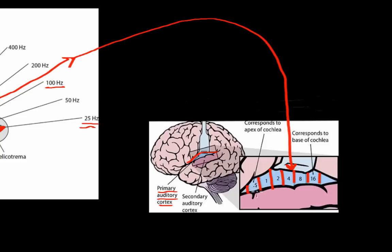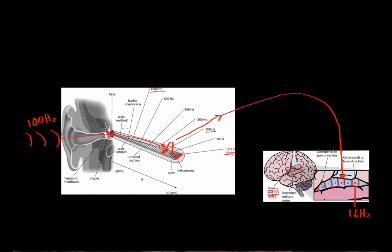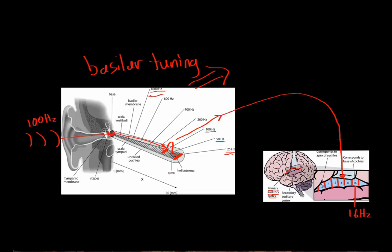For example, one part of the cortex receives information from hair cells sensitive to a frequency of 0.5 Hertz, and another part receives information from hair cells sensitive to 16 Hertz. The reason this is important is that the brain needs to be able to distinguish between various sounds. If all the hair cells were sensitive to every single sound, whenever you heard any sound all the hair cells would fire at once and the brain wouldn't be able to distinguish between different sounds. So by having basilar tuning, the brain is able to differentiate between sounds with a very high frequency and sounds with a very low frequency. This mapping of sounds with a higher versus lower frequency is known as tonotopic mapping.